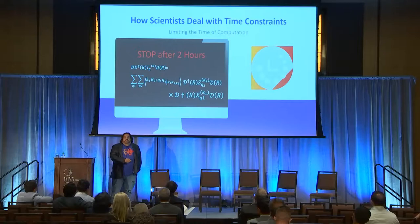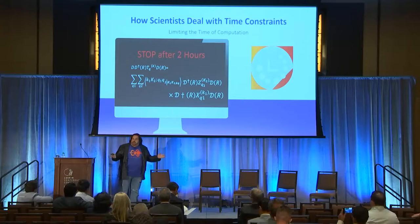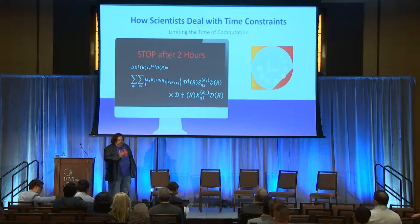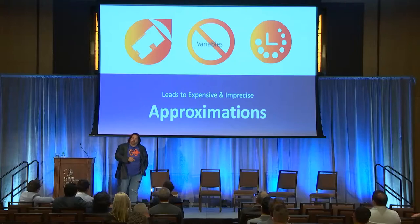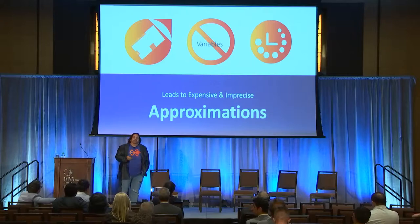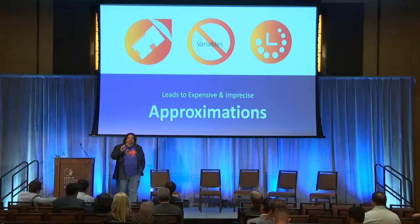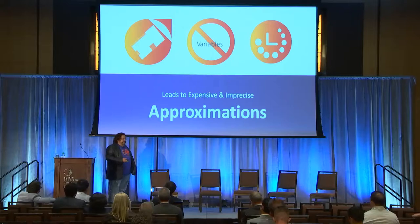Ultimately they may just shorten the time the computation runs — say two hours when it could take 12, 24, or 48 — and take the best answer they get after two hours. That leads to an approximation. And when you want the most optimal answer, an approximation means you don't necessarily know just how good your answer is. Companies are putting hundreds of thousands, hundreds of millions of dollars a year, having teams of data scientists and PhD mathematicians working day in and day out just to squeeze another fraction of a percent out of their optimization.